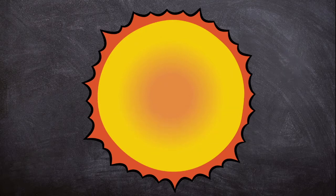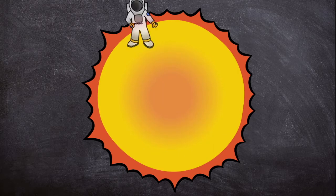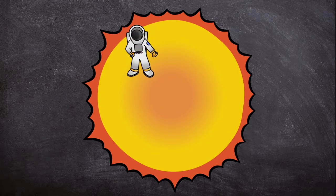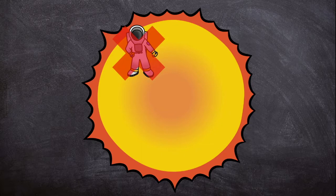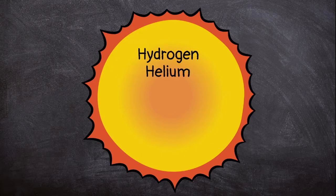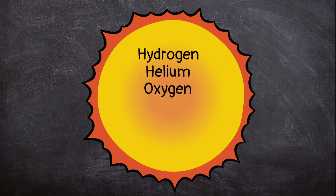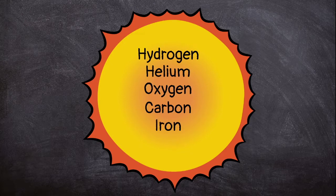The sun is not made of rock like Earth. You would not be able to stand on it because it is not solid. It's mostly made of gas. The sun is 74% hydrogen and 24% helium. The rest is oxygen, carbon, iron, and neon.